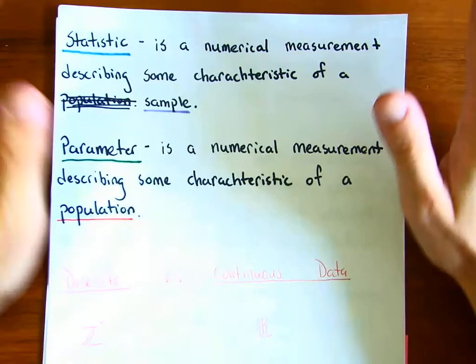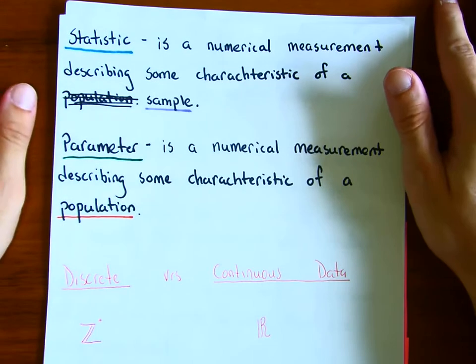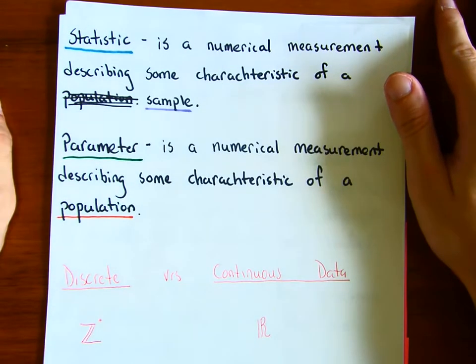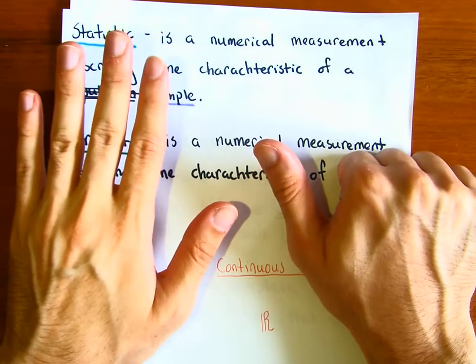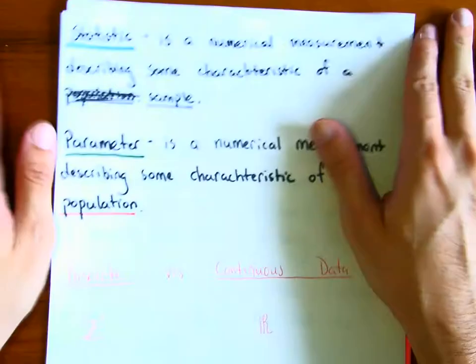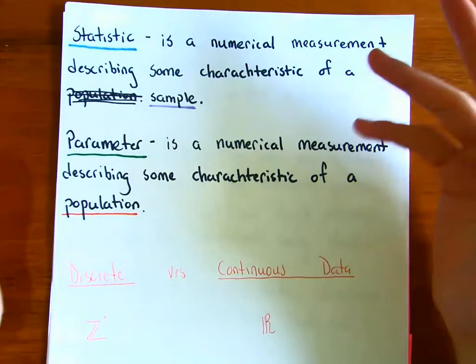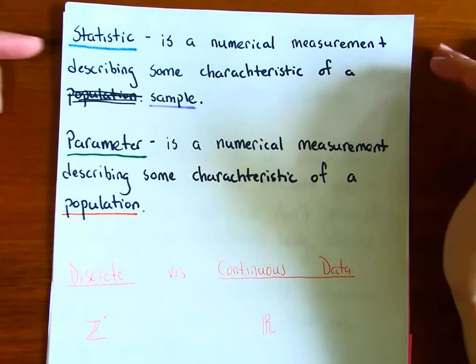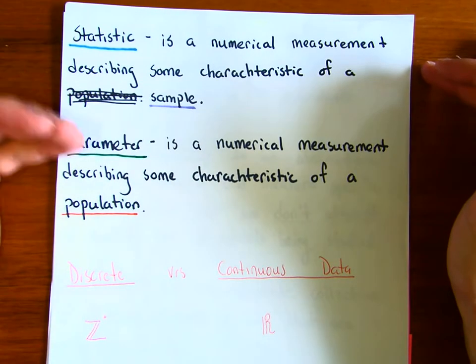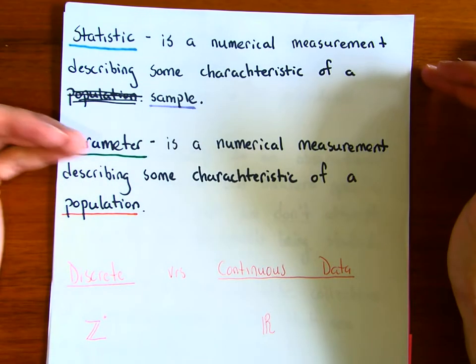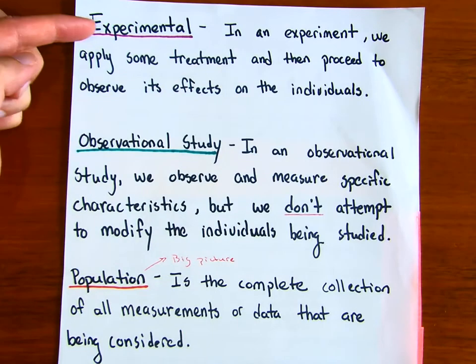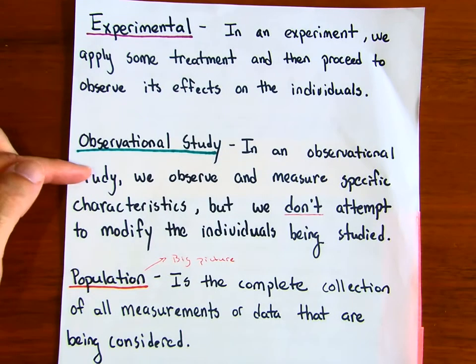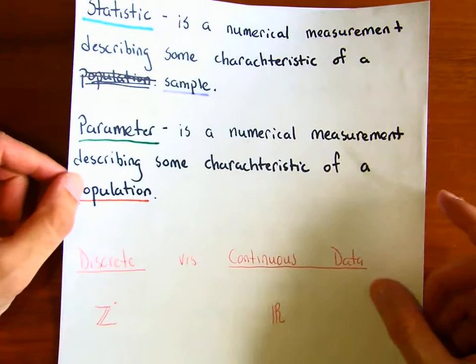Welcome everybody, let's continue chapter one. In this section we have six vocabulary words to get through, and we're going to chunk them into three parts. The first part covers statistic and parameter, the second part covers discrete and continuous data, and the third part covers experimental and observational study.